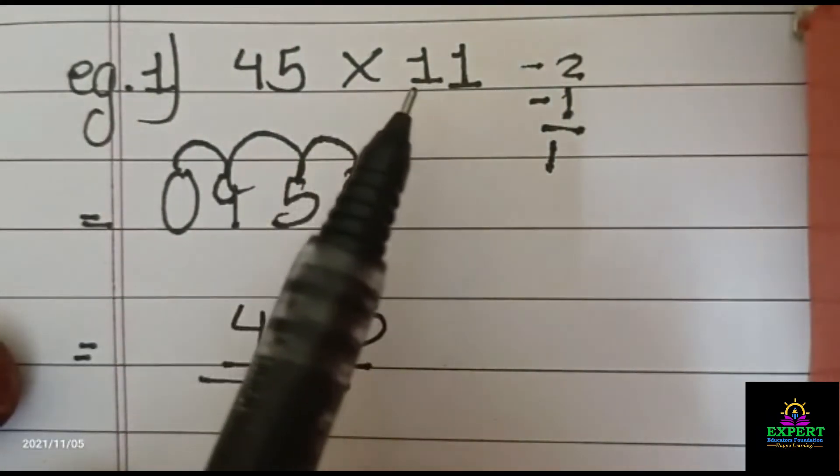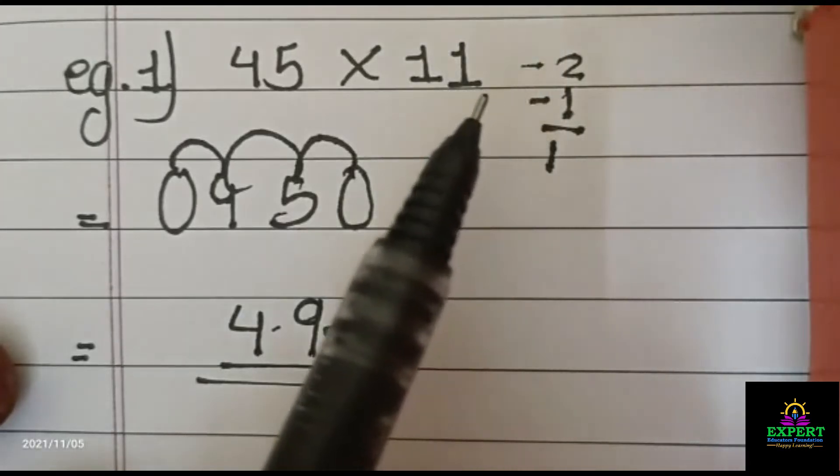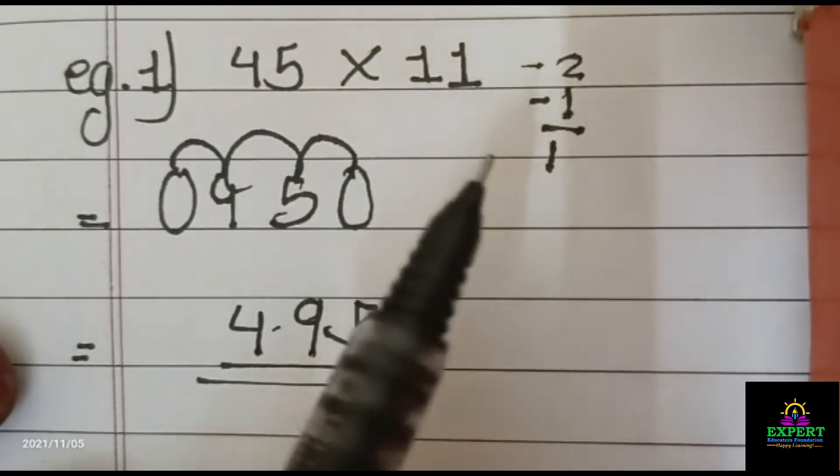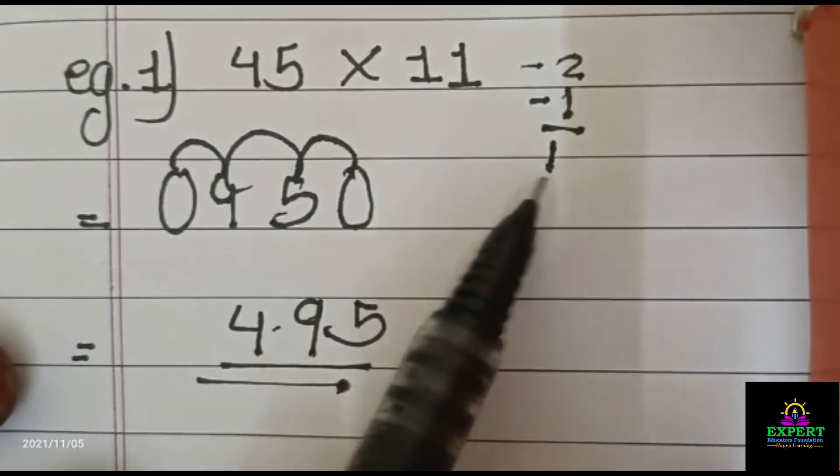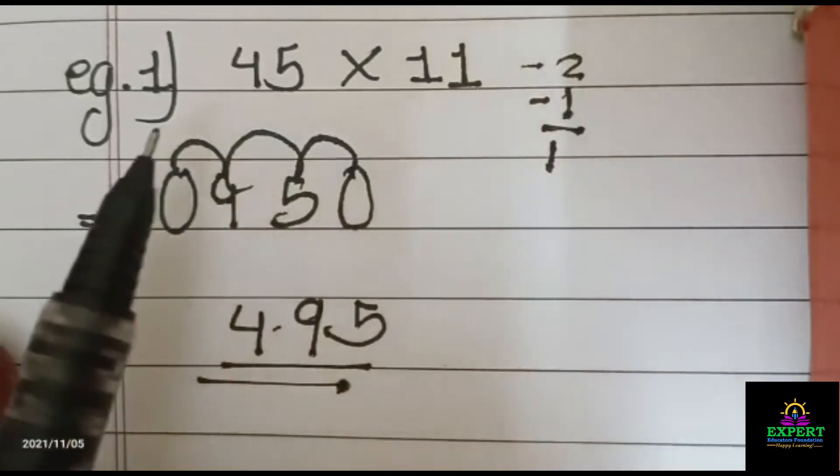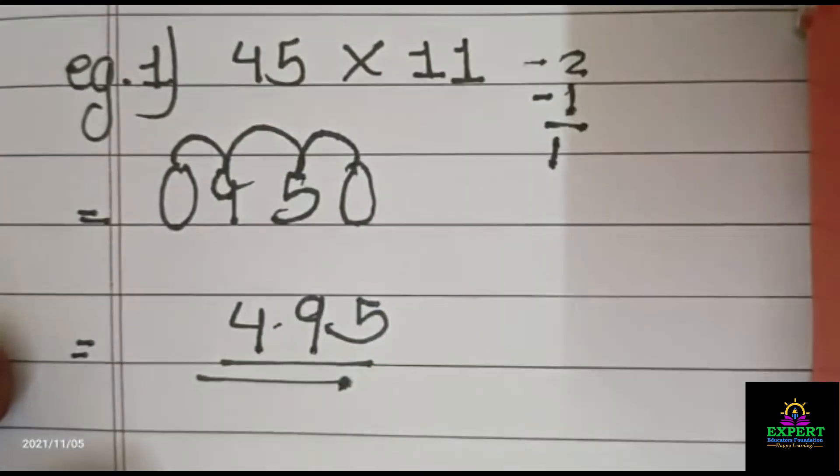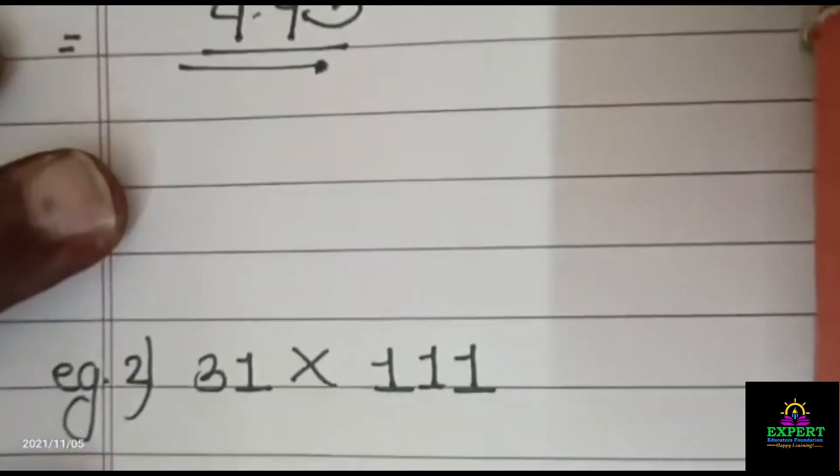Whenever you are multiplying this type of multiplication, you have to minus 1 digit. And whatever your answer is, that number of zeros you have to put at the front and backward. So here I have taken second example.